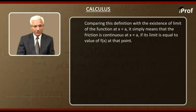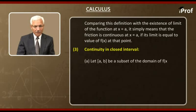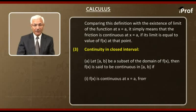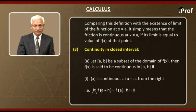Now we discuss continuity in a closed interval. Let [a, b] closed interval be a subset of the domain of f(x). Then f(x) is said to be continuous in the closed interval [a, b] if, number one, f(x) is continuous at x equal to a on the right. That is, limit h tends to 0 f(a + h) is equal to f(a) whenever h is greater than 0.